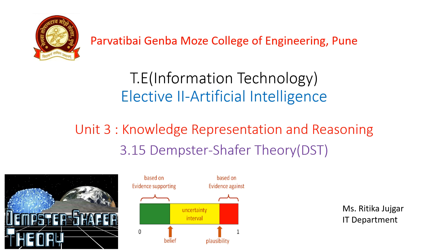Unit 3 is based on knowledge representation and reasoning, where we already discussed about knowledge representation. Another point is the techniques of knowledge representation: well-formed formulas, proposition logic, predicate logic, first-order logic, reasoning, types of reasoning, rule of inferences, probability, conditional probability, the Bayes theorem and the Bayes network. So in this video we will discuss about the Dempster-Shaffer theory, that is DST.